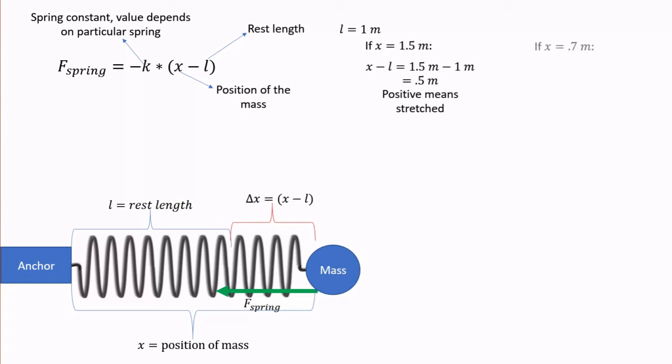On the other hand, if the current length was 0.7 meters, we would do 0.7 minus 1 and get negative 0.3, which means the spring is compressed by 0.3 meters.